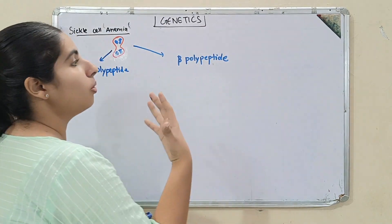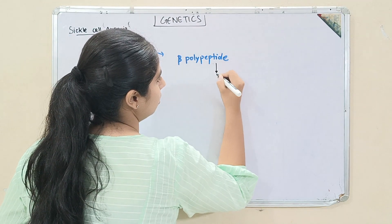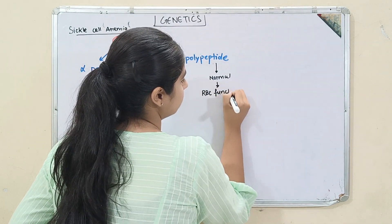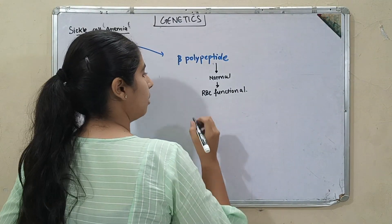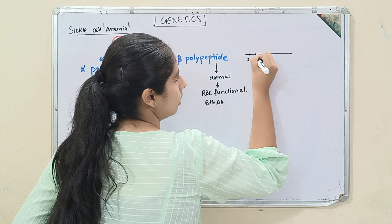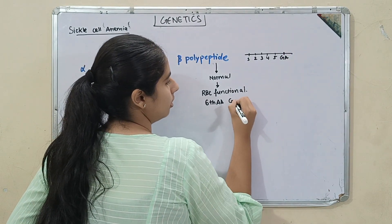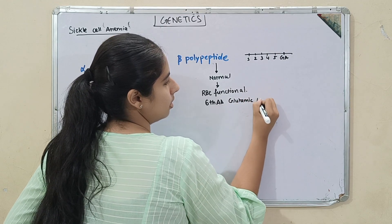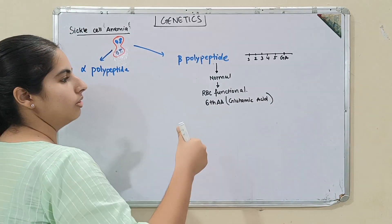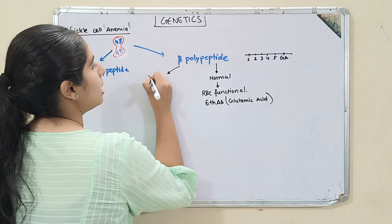If the beta polypeptide is normal, the RBCs will be functional and work properly. The 6th amino acid of the beta polypeptide chain will be glutamic acid — that is normal. But if a person has sickle cell anemia, the 6th amino acid changes from glutamic acid to valine.